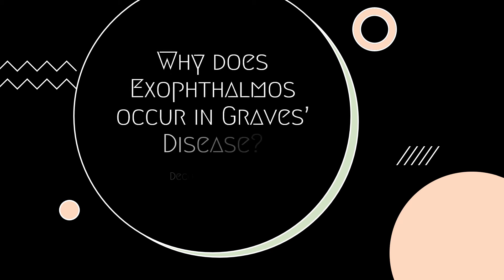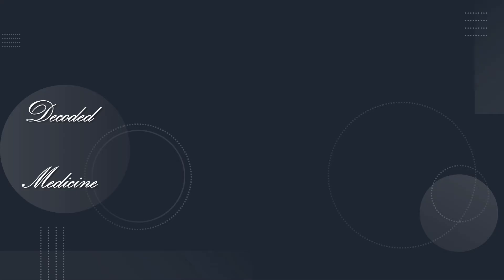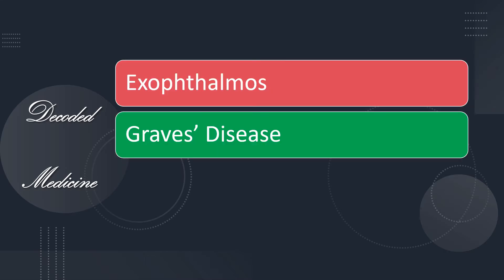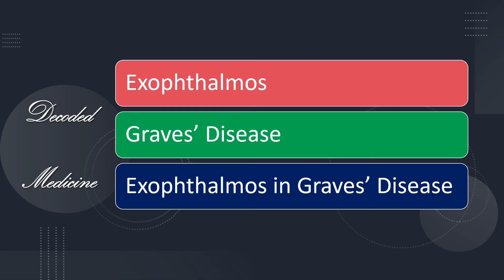Why does exophthalmos occur in Graves disease? This question can be answered by understanding exophthalmos, Graves disease, and then knowing the link between the two.